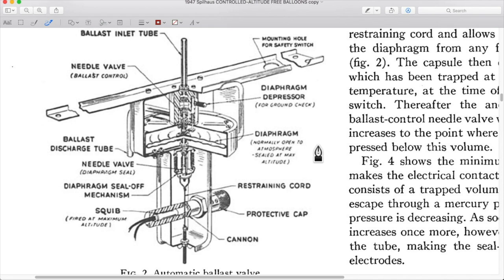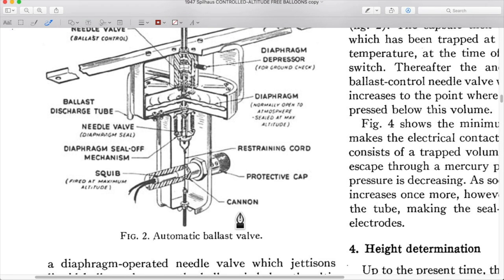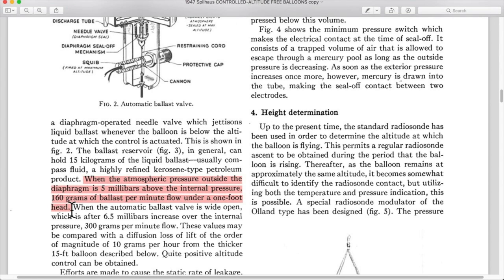So we see here another reminder of that, that it is normally open to atmosphere and sealed at max altitude. And by the way, in this old-fashioned drawing of the squib, they refer to the knife, I believe, as a cannon. When the atmospheric pressure outside the diaphragm, that's the little sealed can with the flexible sides, is five millibars above the internal pressure. Let's go ahead and convert that to pascals so we're always using a common unit set for our discussions here. So five millibars is 500 pascals. So when the pressure outside the diaphragm is five millibars above the internal air in the diaphragm, 160 grams of ballast per minute flow under a one foot head. There's a lot to unpack in this sentence here.